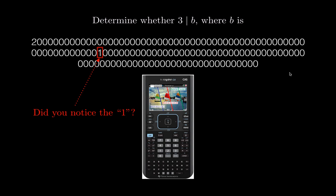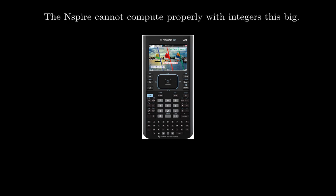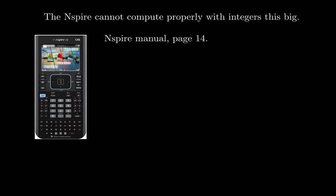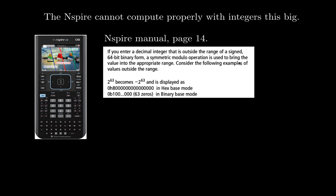If you want to enter this number into your calculator, it might not be the best way to check for divisibility. There's one problem with this calculator in particular. If you look at the manual on page 14, basically what it means is the largest number you can enter is in 64-bit binary form. So if you enter the number shown, the calculator will store it approximately, not exactly, so it won't help you decide whether 3 divides that number because it's too big for this calculator.